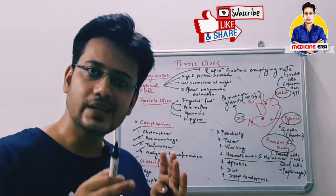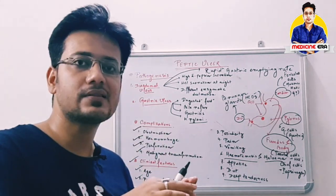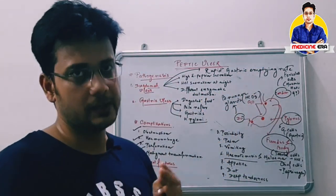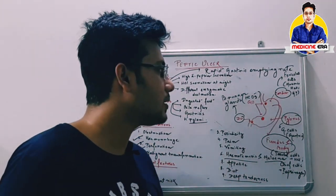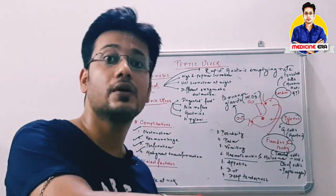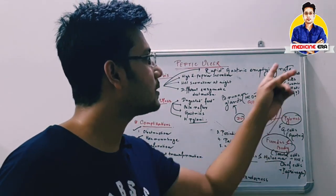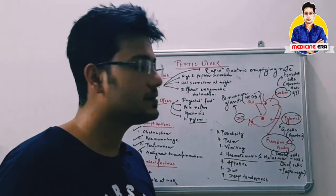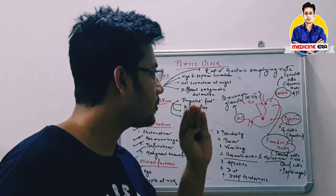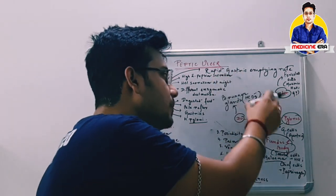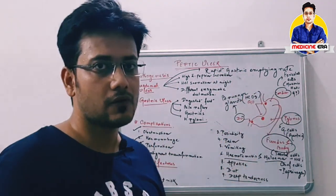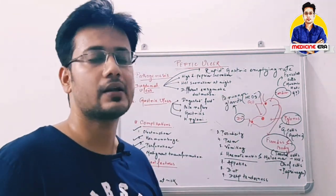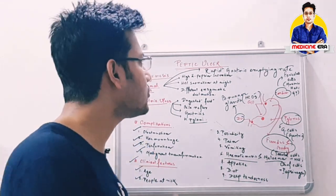To summarize: ulcers are of two types — acute and chronic; chronic ulcer is further divided into duodenal and gastric ulcer. The stomach is divided into parts: cardia, fundus, body, and pylorus. Cardiac cells secrete mucus, water, and glycoproteins; G cells in pylorus secrete gastrin; parietal cells in fundus and body secrete HCL; chief cells secrete pepsinogen; and Brunner's glands in the duodenum secrete bicarbonate ions. Understanding these secretions helps in understanding disease mechanisms.